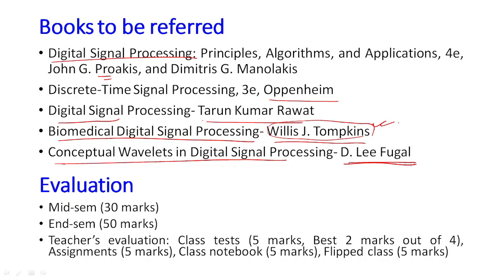For evaluation, there are three components at NIT. The first is mid-semester marks, which is a 30-mark component held centrally. The semester examination is 50 marks. Then there is teacher's evaluation with four components. The first is cluster tests worth five marks — at least three clusters will be conducted, and the best two marks will be taken. One cluster will be next month, the second in October, and the third in November.